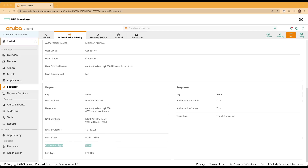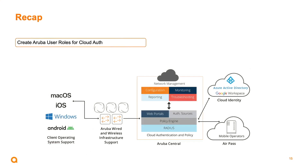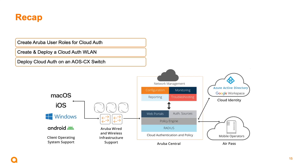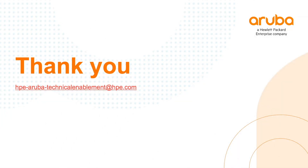Now that we've shown a successful authentication by a wireless and wired device utilizing the cloud authentication solution, let's recap what we accomplished today. Number one, we created Aruba user roles for cloud authentication solution use. We created and deployed a cloud authentication enabled wireless network on the Aruba wireless infrastructure. And finally, we deployed the cloud authentication solution against an AOS-CX switch. That concludes today's video on wired and wireless setup for the cloud authentication solution. Please use the email address on the screen for any additional questions, and thank you for joining this video on the Aruba cloud authentication solution.